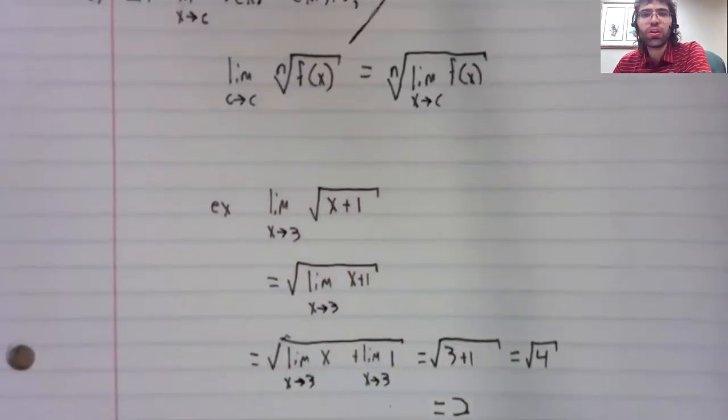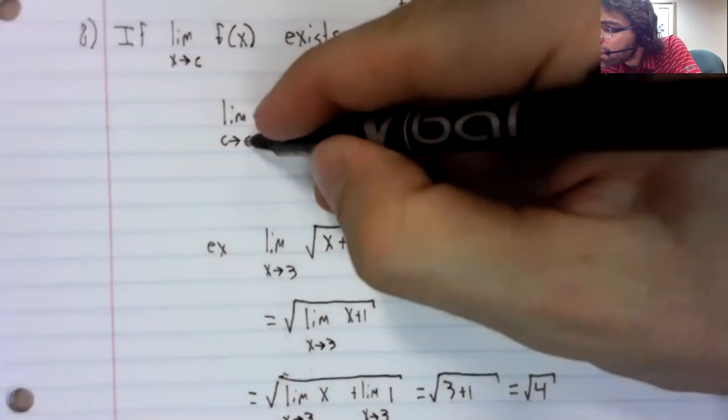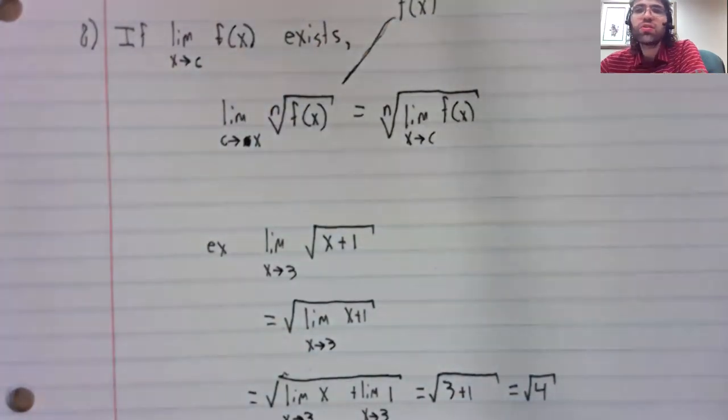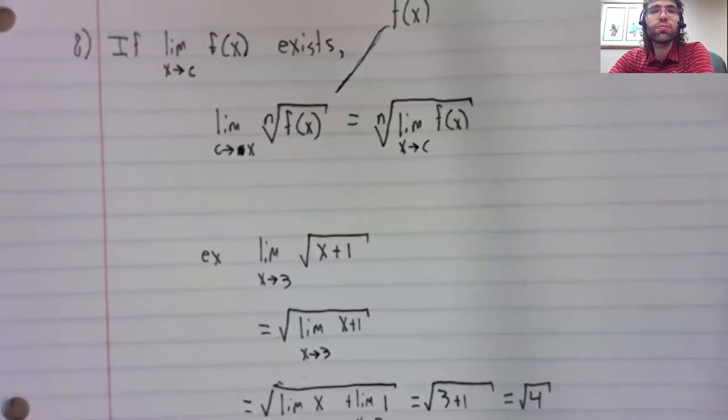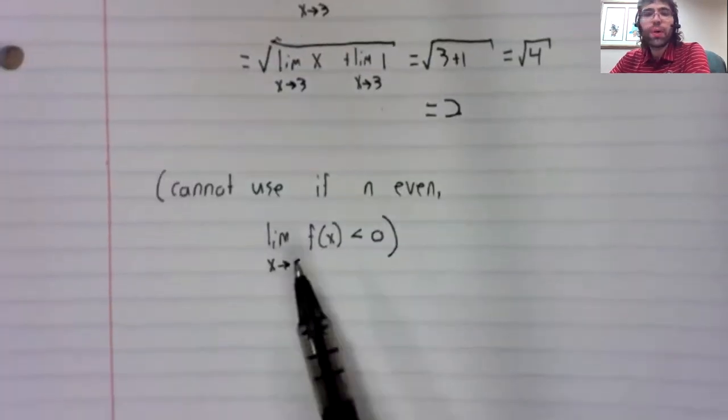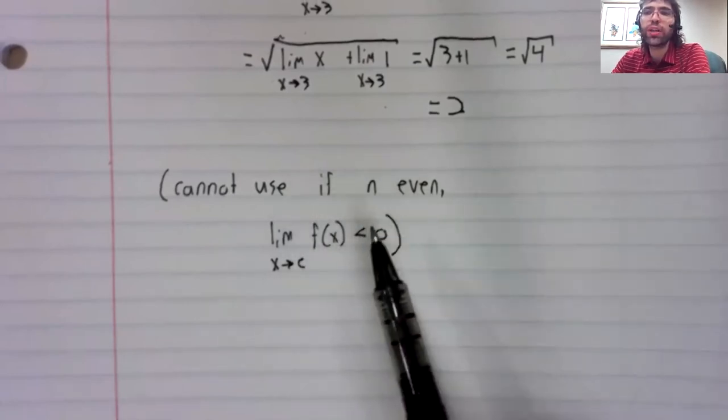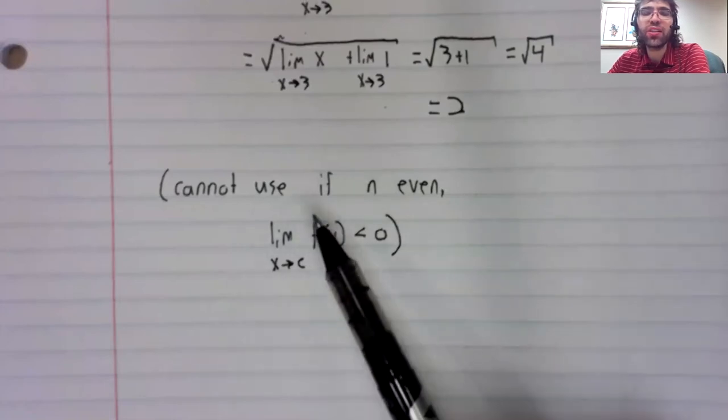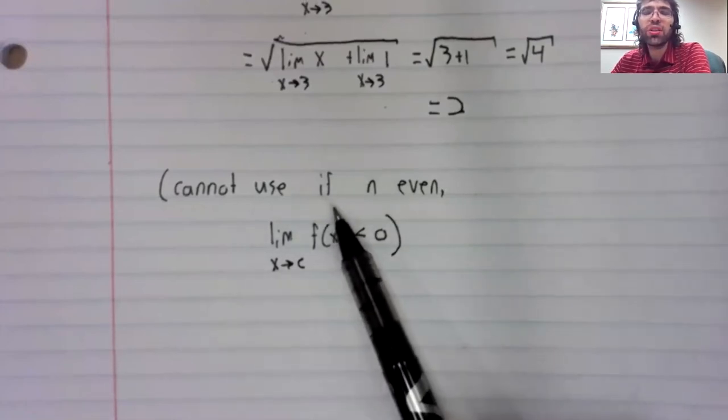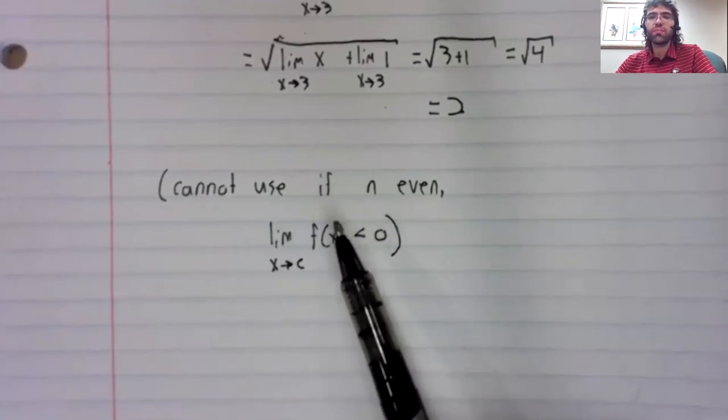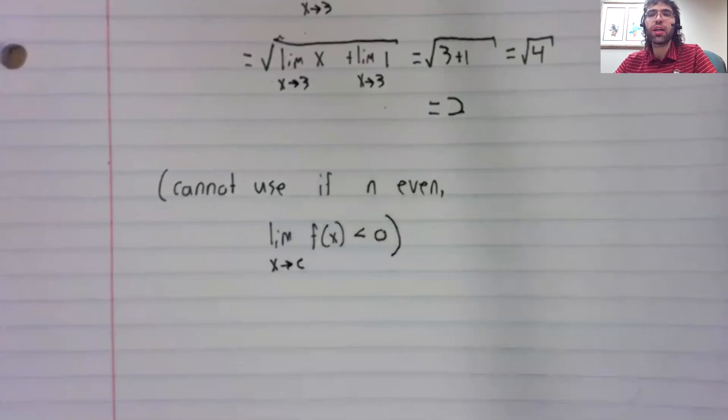But other than that, this rule goes through. And unlike the quotient rule, we're not actually going to have trouble with this. We're not going to run into cases where we want to take a limit but can't because of this restriction. So it's a pretty minor thing.